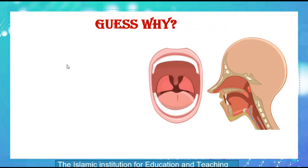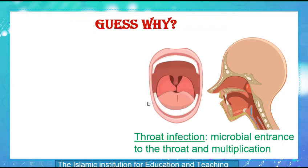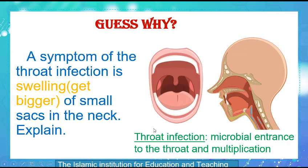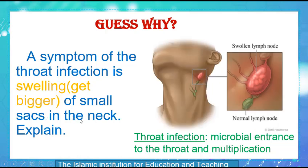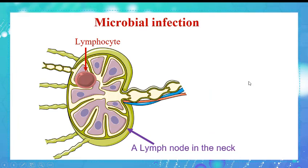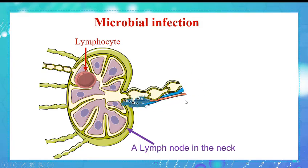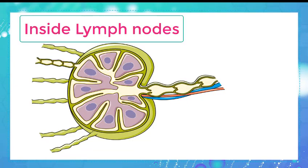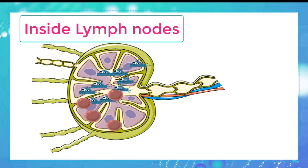This person shows a throat infection, which means microbial entrance to the throat and multiplication. A symptom of the throat infection is swelling — meaning the small sacs in the neck get bigger, as shown in the figure. These small sacs are the lymph nodes. Lymphocytes are present in lymph nodes waiting for cooperation in the defense against microbes. After microbes enter the lymph nodes, they proliferate there, and lymphocytes are activated and increase in number, which causes the swelling of the lymph nodes.